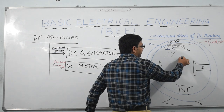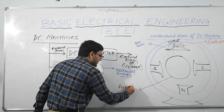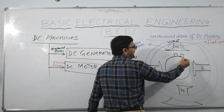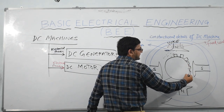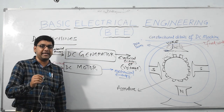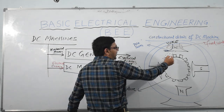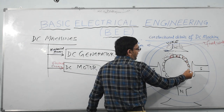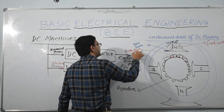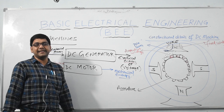There is another important component at the centre called the armature conductor, also called the armature. Over its periphery there are certain gaps or openings called slots. These slots are used to keep certain windings or conductors in them. Such windings are termed armature windings, also called armature conductors.